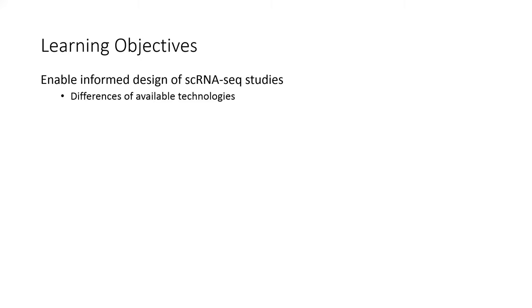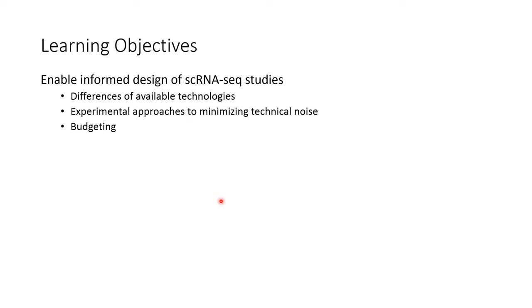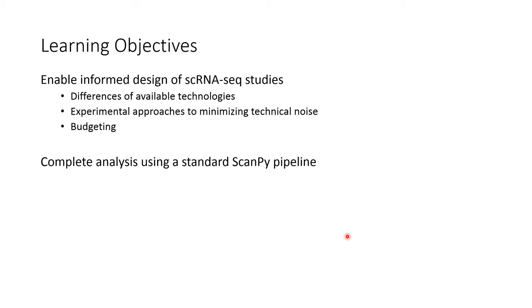At the end of the workshop, participants should be able to make informed decisions on the design of single cell RNA-seq experiments. We'll start by discussing what kinds of questions can be asked with single cell RNA-seq technology and what specific technology is best for answering different questions. We'll also discuss experimental tools available to help deal with technical variation, and conclude with a discussion of trade-offs between cost and sensitivity. Participants can also expect to learn how to conduct a complete single cell RNA-seq analysis using the ScanPy software in Python. I chose this over the commonly used Seurat software in R because I find Python more intuitive, but both tools can do the exact same thing.